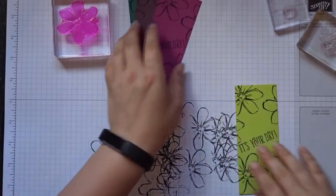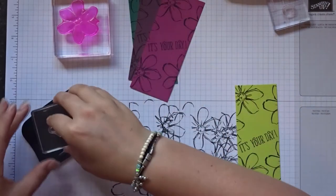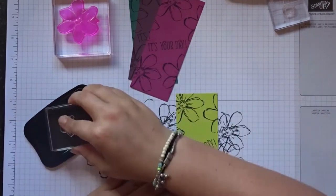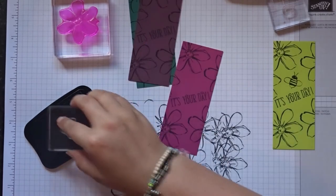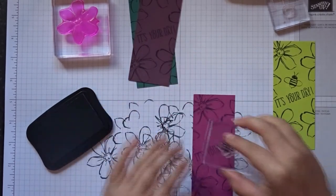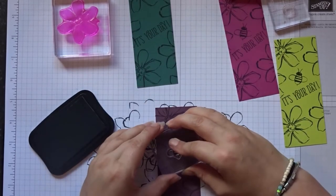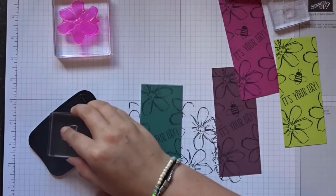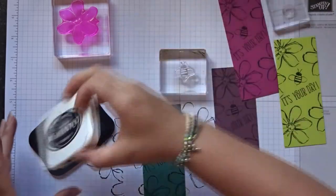Now we're going to go back in with this little bee—hopefully you can see him, he's very cute—and we're just going to go back in and put that in the little gap we've left. So each one will have its own little bee and I think he's so cute. Now we're done with the black.